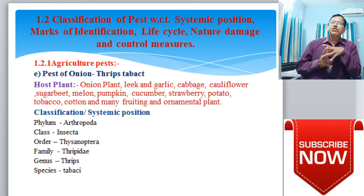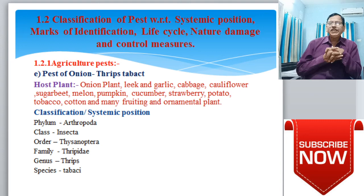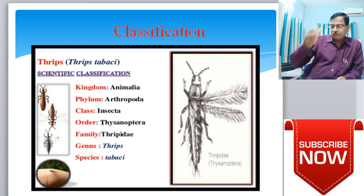From a classification or systematic position point of view, this onion pest — Thrips tabaci — is classified as: Phylum Arthropoda, Class Insecta, Order Thysanoptera, Family Thripidae, Genus Thrips, and Species tabaci. So Thrips tabaci is the scientific name of this pest. The classification schematic chart and adult diagram can also be seen.